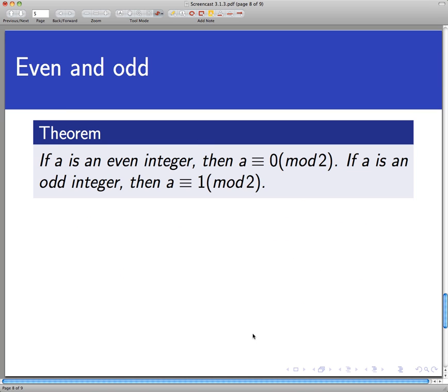So here's a little theorem here that helps relate this notion of integer congruence back to something you already know, namely the notion of even and odd. The theorem says that if A is even, then A is congruent to 0 mod 2, and if A is odd, then A is congruent to 1 mod 2. I'm going to sketch a really quick proof of this, not with a no-show table, but just with some scribblings and some schematics here.